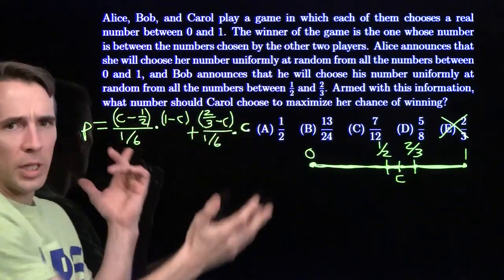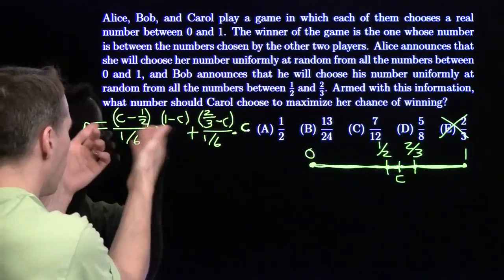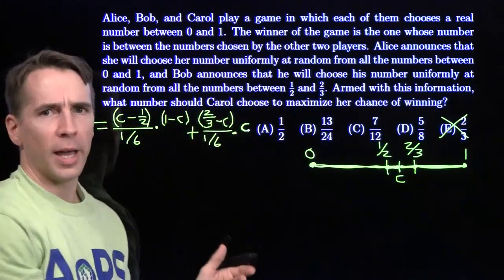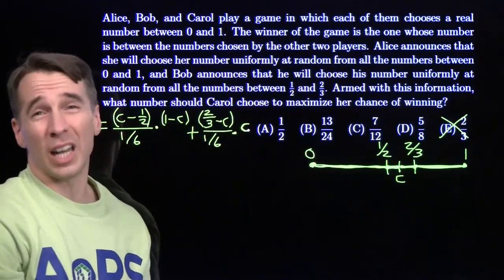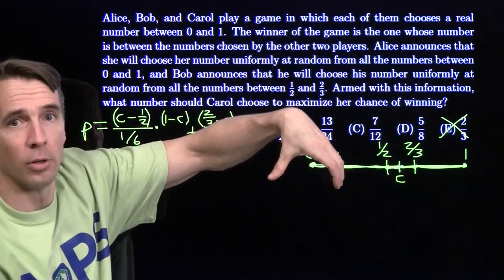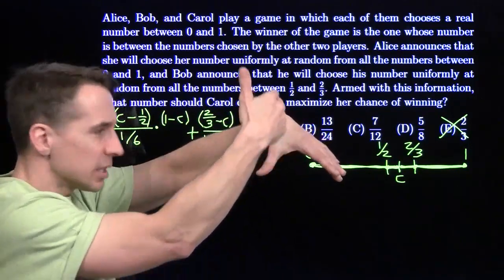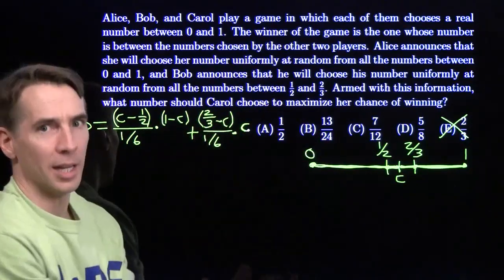I can see right away it's going to be a quadratic, and the coefficient of the C² term is going to be negative. So if I graph this, P on the vertical axis, C on the horizontal, I'm going to have a parabola pointing down, and I want that top point. The value of C at that top point, the vertex, is going to tell me my answer.